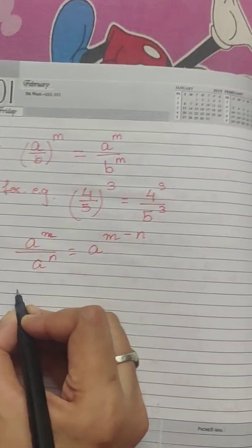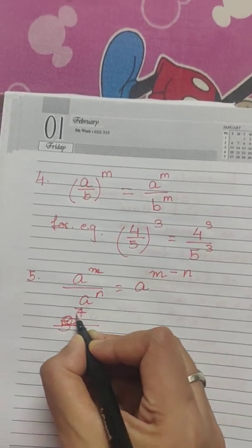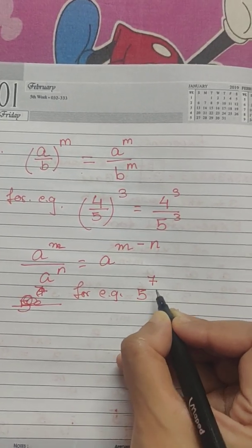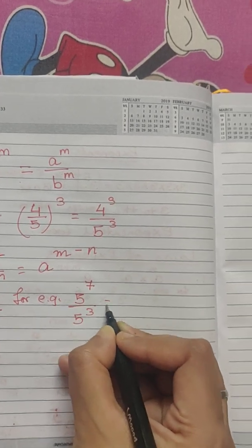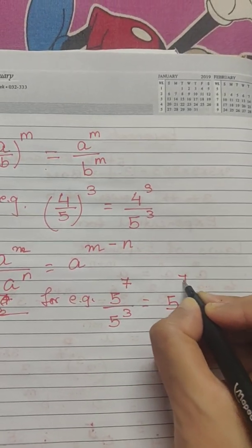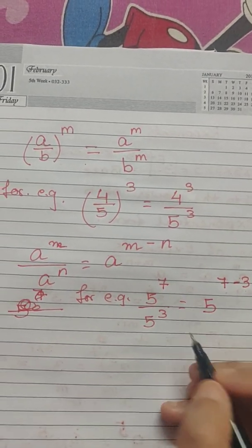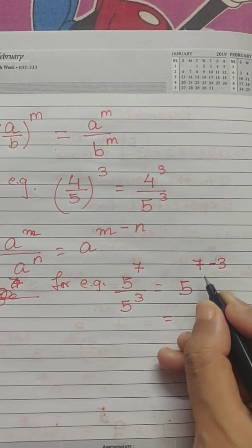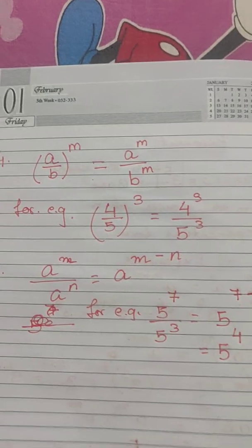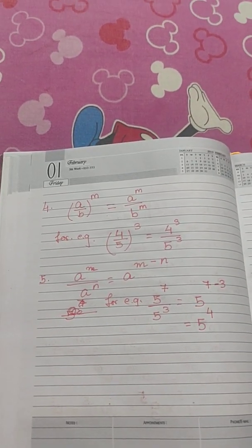For example, let us go with 5 to the power 7 by 5 to the power 3. So we can write only one base and as we have learned in the law we will subtract the exponents. So what do we get upon subtraction? 5 to the power 7 minus 3, we get 5 to the power 4.